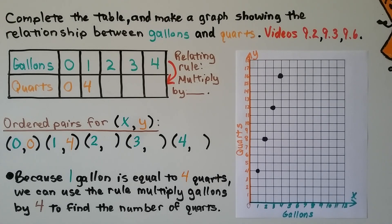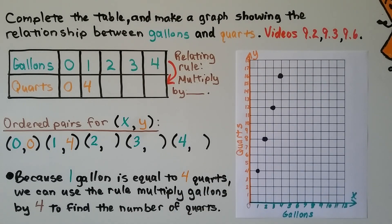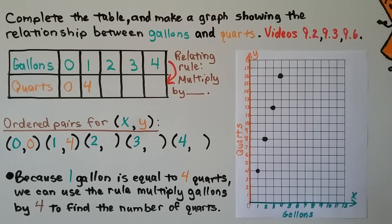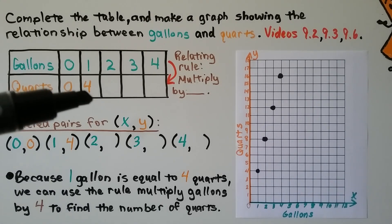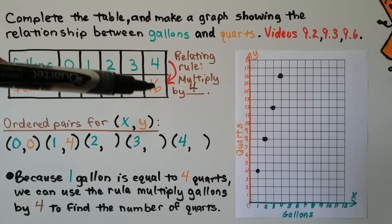We need to complete a table and graph showing the relationship between gallons and quarts. The gallons sequence goes 0, 1, 2, 3, 4. When we have zero gallons, we have zero quarts; one gallon is four quarts. The relating rule is multiply by four. So two gallons is eight quarts, three is twelve, and four is sixteen quarts.